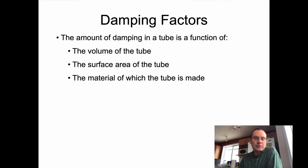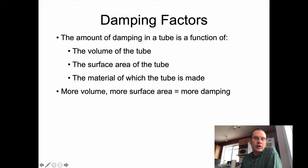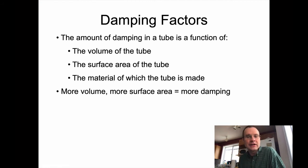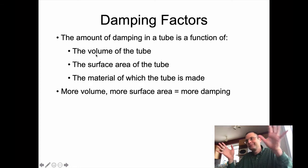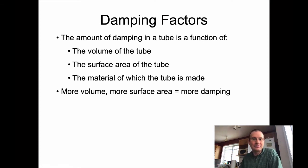The amount of damping we get in a tube is going to be a function of the volume of the tube, the surface area of the tube, and the material of which the tube is made. Basically, the more volume and the more surface area you get, the more damping you're going to get. If the material is more spongy or soft, that'll absorb more energy from the sound wave too. Damping is just a function of energy getting lost to the system — if it has more volume or more surface area to spread out into, you're going to lose more energy.